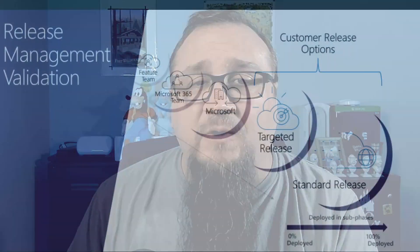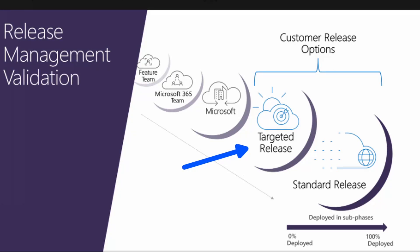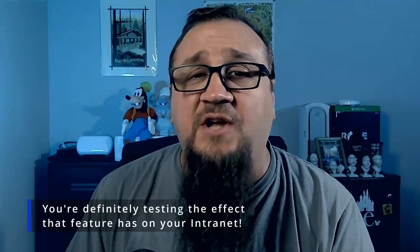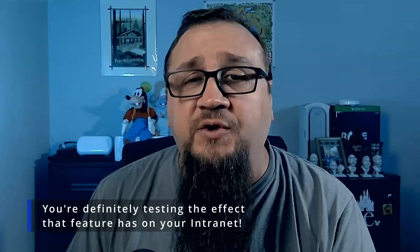This is called the targeted release. If you opt into this, you will get those features before standard release. This does mean there's a little bit of risk because there could be issues with that particular feature, and you're essentially testing this for Microsoft. They do go through a number of testing phases to ensure things are rock solid, but they'll also be gathering feedback from those targeted release customers to make further tweaks and improvements before rolling it out to the standard release tenants. If you want to check your tenant to see which one you're on, here's how to do it.